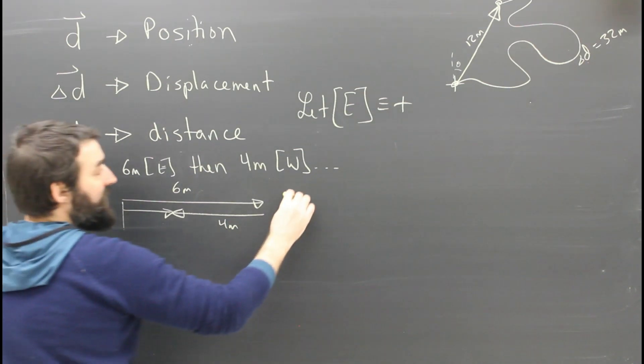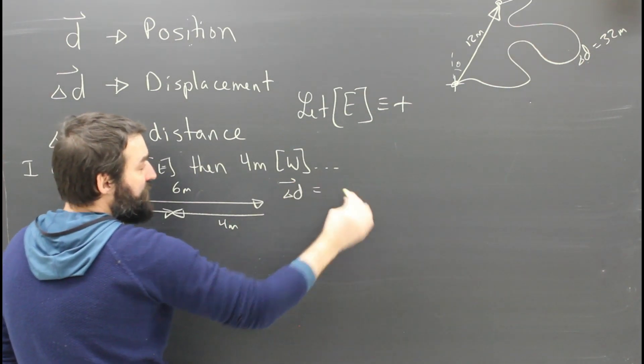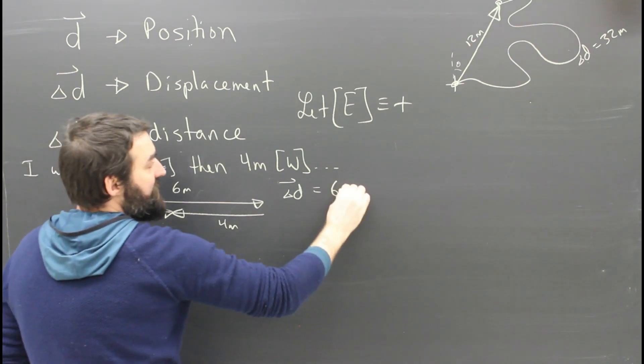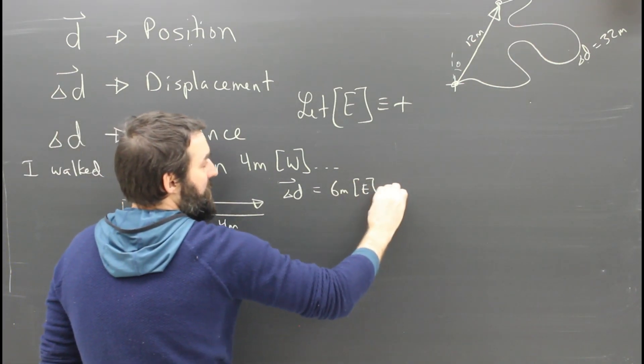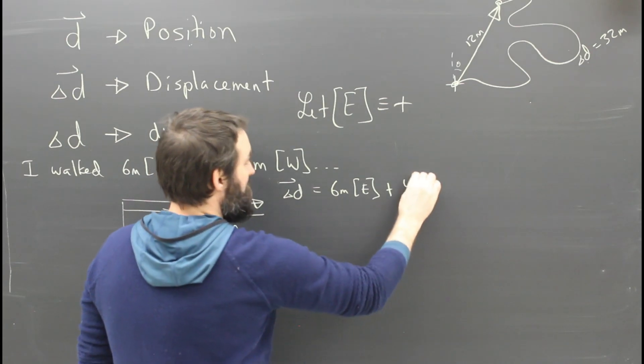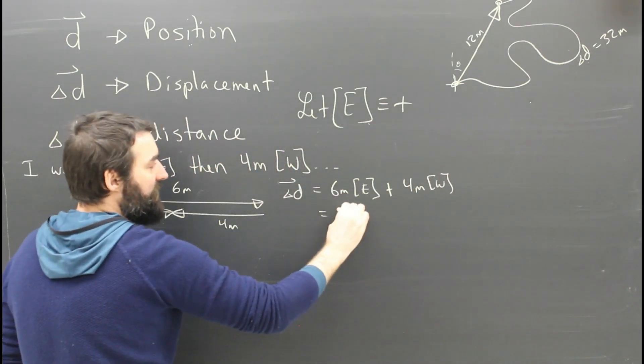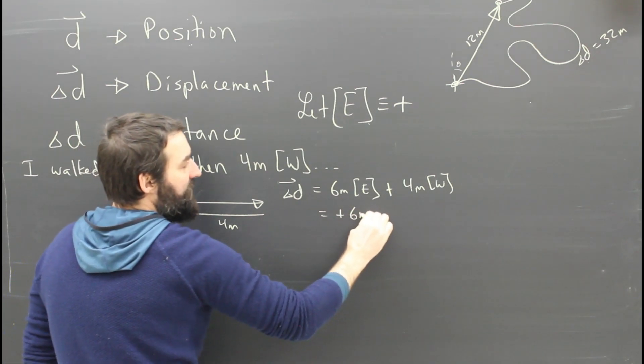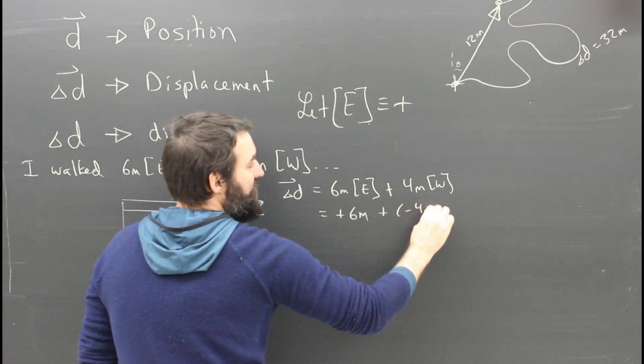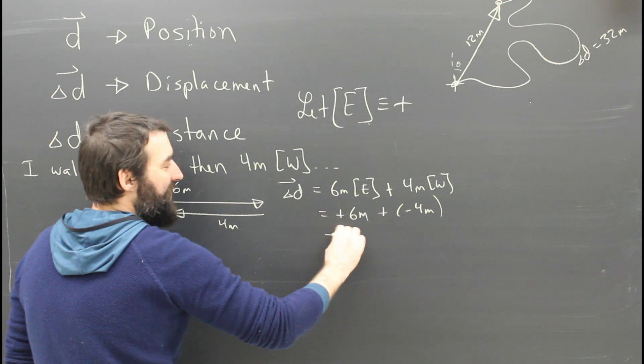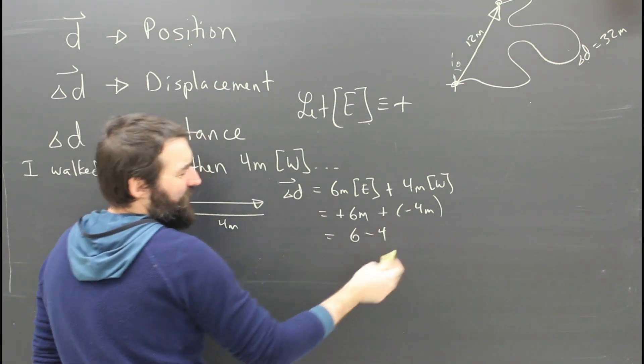I can do that mathematically. I can say that my displacement is going to be six meters east plus four meters west. But since I said east was positive, that means I've got positive six plus negative four. I wouldn't write this down every time. It's six minus four, no big deal.